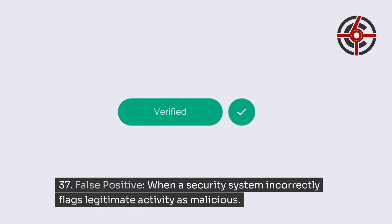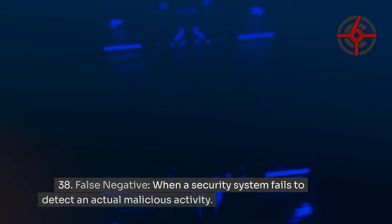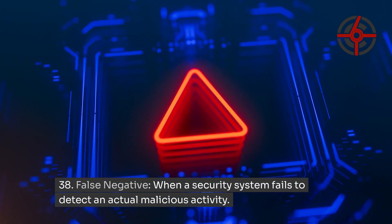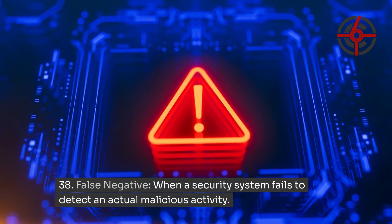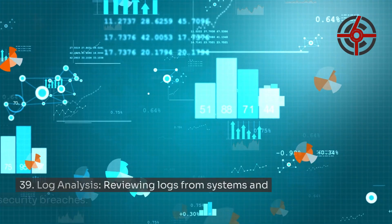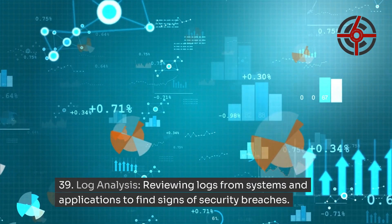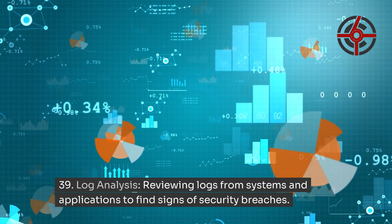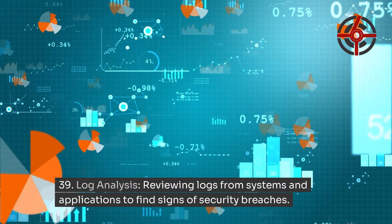False Positive: when a security system incorrectly flags legitimate activity as malicious. False Negative: when a security system fails to detect an actual malicious activity. Log Analysis: reviewing logs from systems and applications to find signs of security breaches.